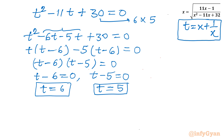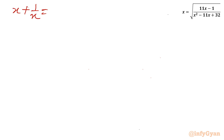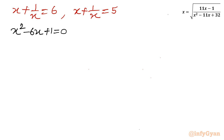Since t equals x plus 1 over x, we now solve: x plus 1 over x equals 6, and x plus 1 over x equals 5. After taking LCM and rearranging: x squared minus 6x plus 1 equals 0, and x squared minus 5x plus 1 equals 0.